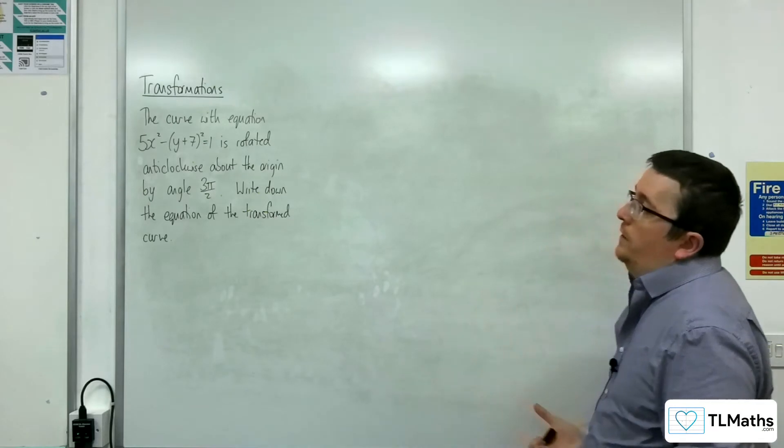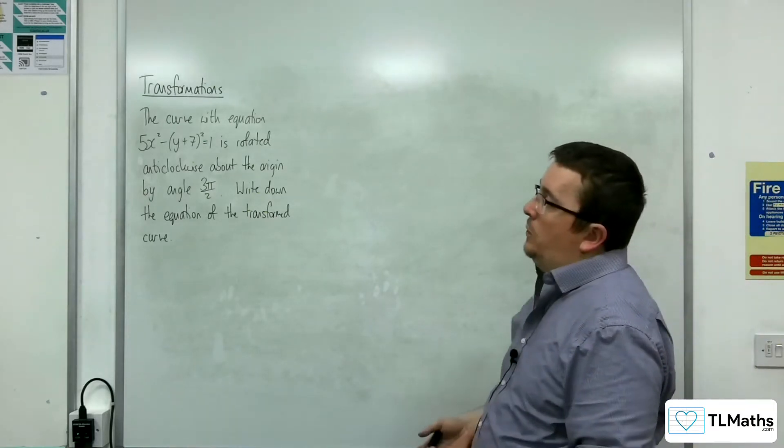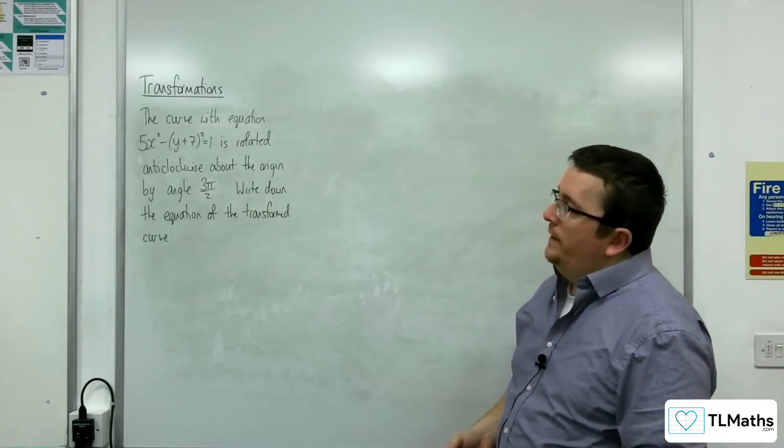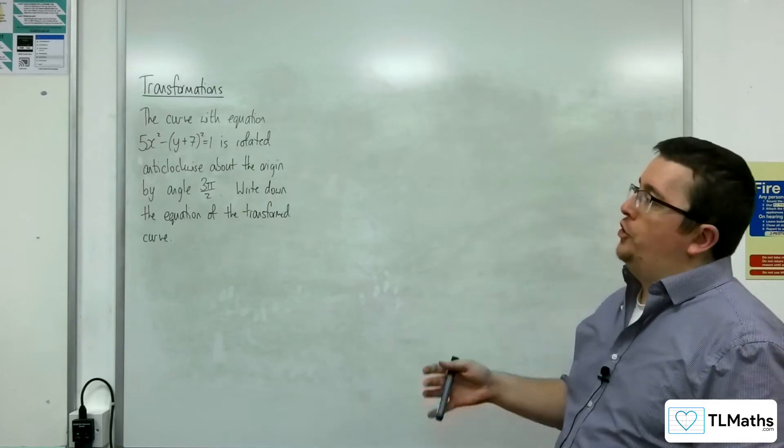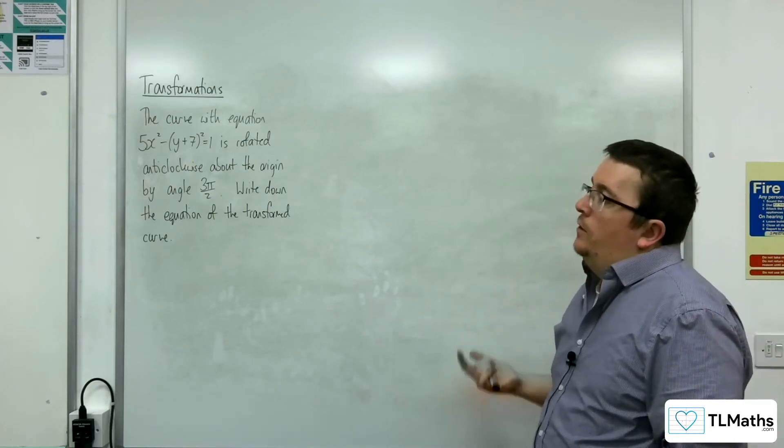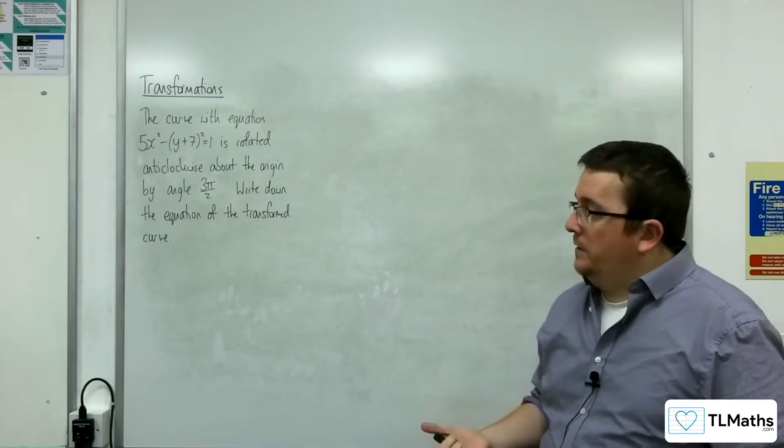In this problem we have the curve with equation 5x squared take away y plus 7 all squared equals 1, which is rotated anticlockwise about the origin by angle 3π over 2. Write down the equation of the transformed curve.